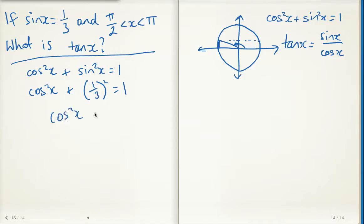Okay, so cos squared x plus 1 over 9 is equal to 1, which means that cos squared x is equal to 8 over 9. Okay, 1 minus 1 ninth is 8 ninths. I want to take the square root of both sides here, and I get cos x is equal to plus or minus the square root of 8 over 3. I already took the square root of 9. All right, now we need to ask ourselves, are we talking about positive or negative? Well, that goes back to the quadrant.